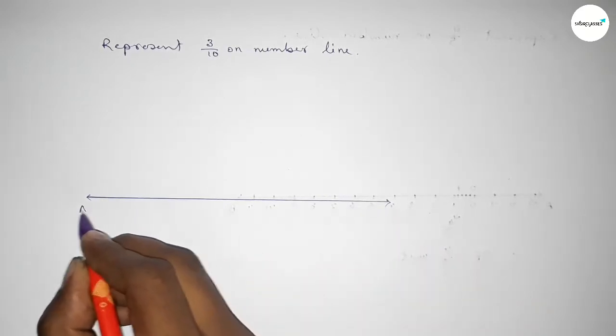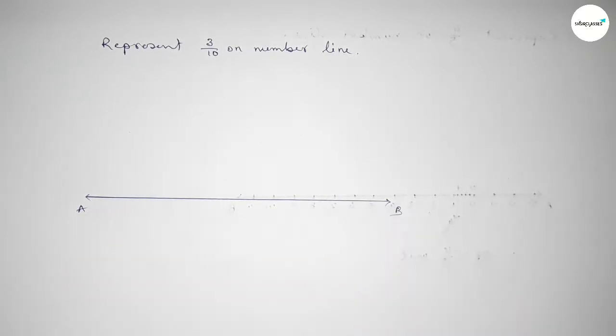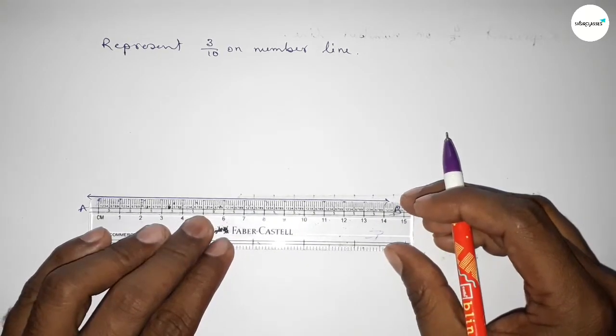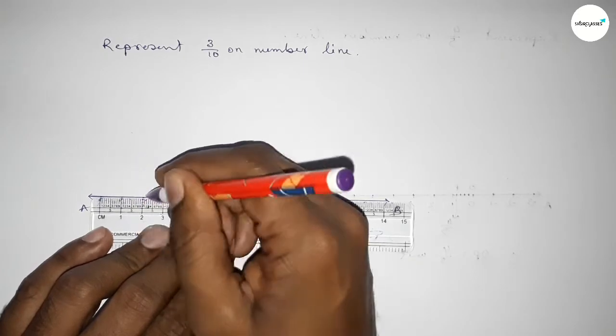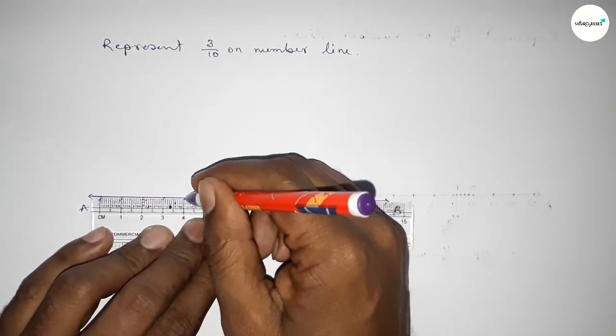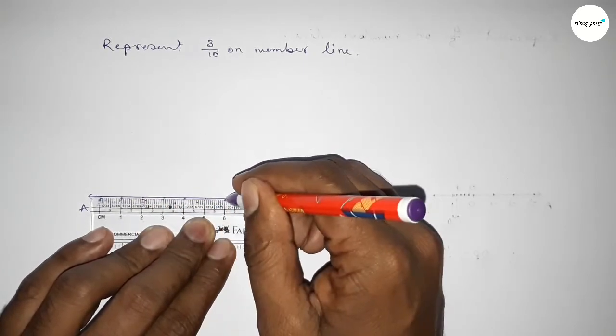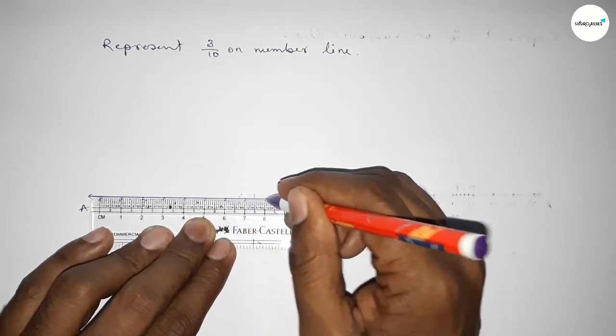Draw a line of any length and add arrow marks on both sides. This is the line. Next, mark the numbers on the line by using a scale.